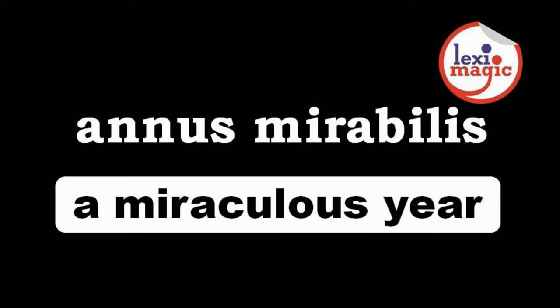Annus mirabilis means 'a remarkable year.' For capitalists, a perfect example of annus mirabilis is the year 1989, when we saw the collapse of major communist governments across Europe.